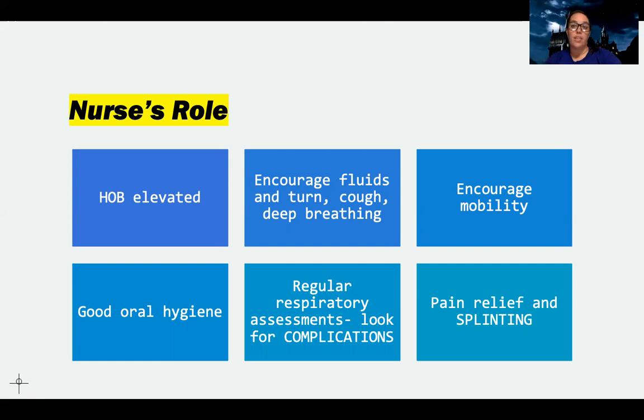Good oral hygiene is key. Even if they already have pneumonia, we really don't want to stop anything from growing or spreading or getting worse. So we want to keep that mouth clean. Regular respiratory assessment to look for complications. There are a ton of complications of pneumonia. The lung can collapse. They can get a system-wide infection like sepsis. They can have respiratory failure and need to be on a ventilator. There's a lot of stuff that can happen.